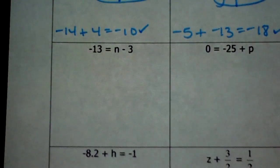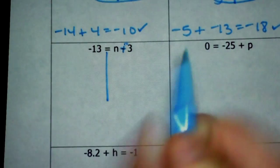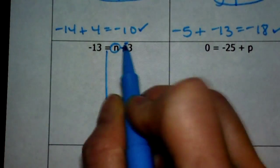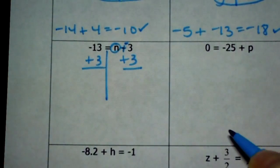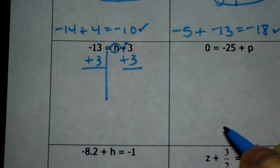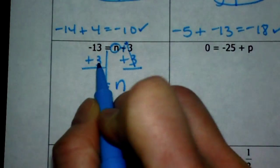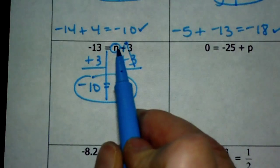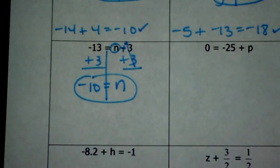Draw my line and change the sign. Here's n — I want negative 3 to go away, so I'm going to add a positive 3. Whatever you do to one side, you have to do to the other — and yes, you have to show your work. Those cancel, and n is alone. Negative 13 plus 3 is negative 10. To check: negative 10 plus negative 3 is negative 13, so we know we're right.